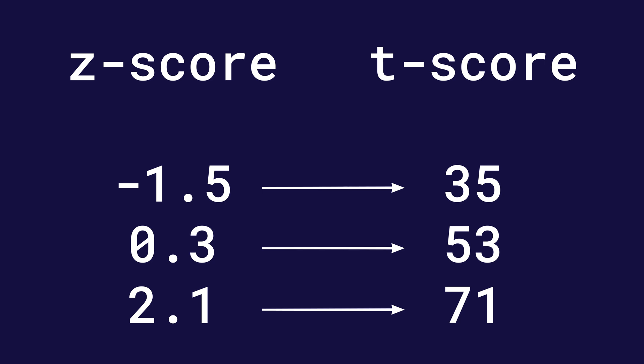Most of your Z scores will fall within the 20 to 80 range for the T score, and we see that here. A minus 1.5 Z score becomes 35 on the T score scale, whereas 0.3 — clearly around average — becomes 53, because on this scale 50 is the midpoint. And our high Z score of 2.1 corresponds to a T score of 71.